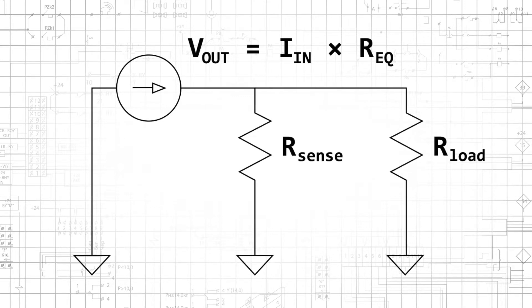But if we connect a load in parallel with this current to voltage resistor, we effectively have two resistors in parallel, and the gain becomes the equivalent resistance. Thus, if we use a large resistor to achieve high gain, and then connect a much smaller load resistance, the gain decreases dramatically.